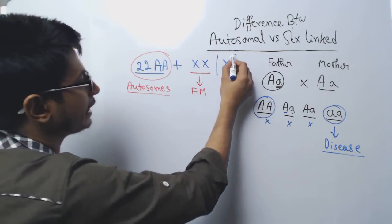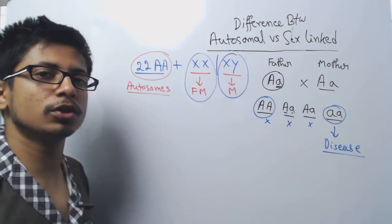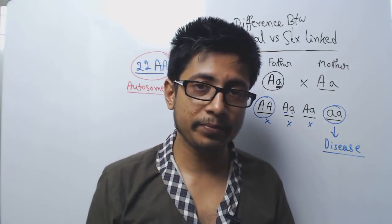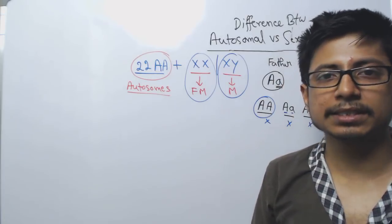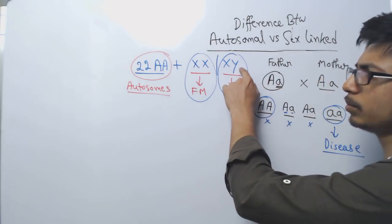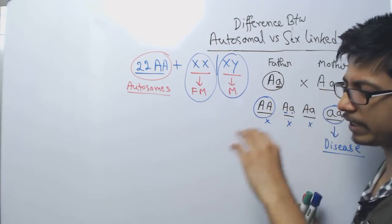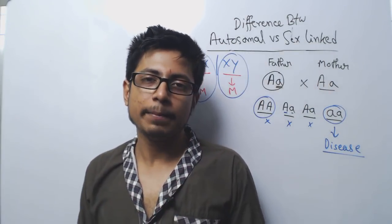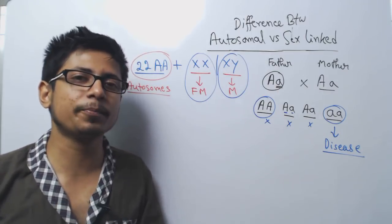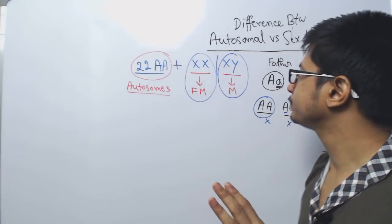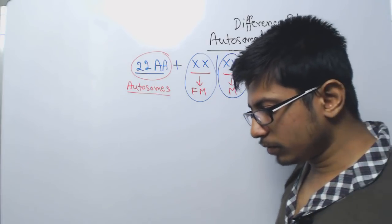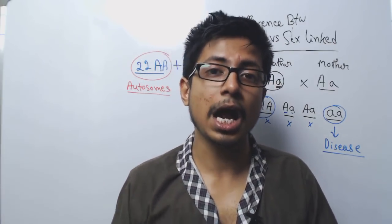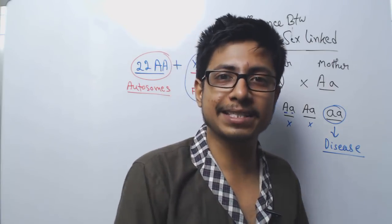If we come back to sex-linked inheritance, it is also known as X-linked inheritance. Though there are two types of sex chromosomes — X and Y — mostly X-related diseases are counted as sex-linked. The genes present in the Y chromosome are very rare and character-specific for males only; they are known as Hollandric genes because Y is only present in males, not in females. The inheritance pattern of genes placed on the X chromosome is known as sex-linked or X-linked inheritance.